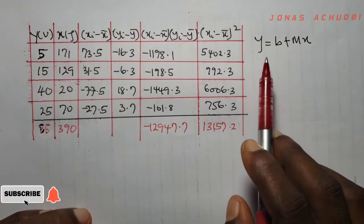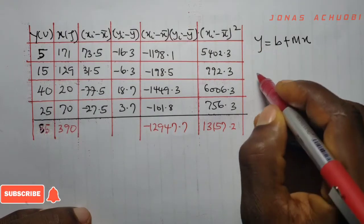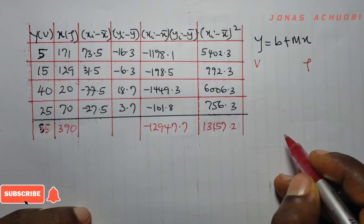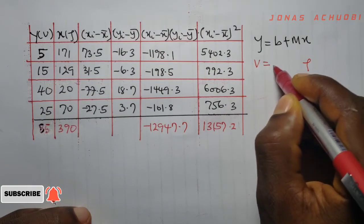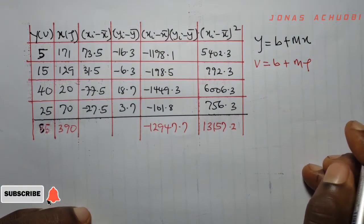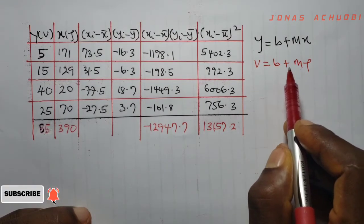On a fitted line y equal to b plus mx, y here denotes the speed while x denotes the density rho. So we can also write this as v equal to b plus m rho. Our job now is to determine the values of m and b.